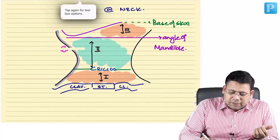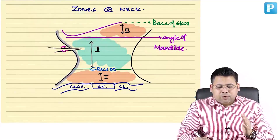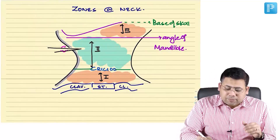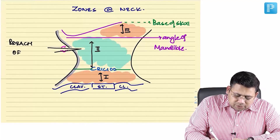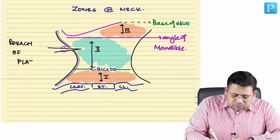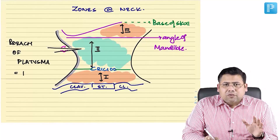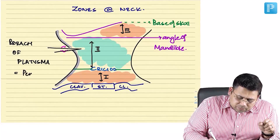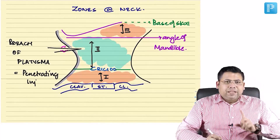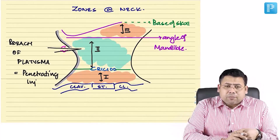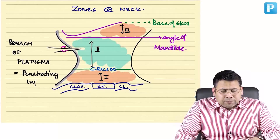By definition, a penetrating injury is any injury which penetrates through the skin, subcutaneous tissue, and the platysma. Breach of the platysma is diagnostic of a penetrating injury — this is very important.